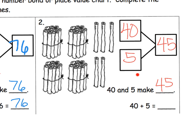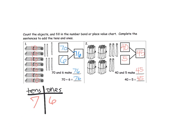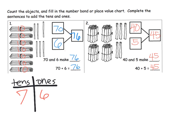We do want students to be connecting this number bond with a number sentence — connecting those two concepts. Now if we wanted to do a place value chart, let's do it. I like causing our students to write the words 10s and 1s. We don't have to give it to them, because if we give it to them, we're removing an opportunity for them to learn it. So make them write in their own words, 10s and 1s. First graders can definitely do that.